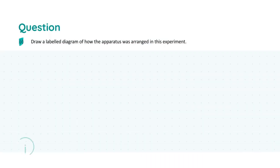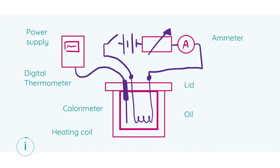Looking at part A(i), the first thing we're asked to do is draw a labelled diagram of how the apparatus was arranged in this experiment. A labelled diagram obviously needs to include your labels — the majority of the marks go for those labels. We're going to take you through the diagram and point out the important buzz terms the examiner is looking for, so it's easier to get your full marks.